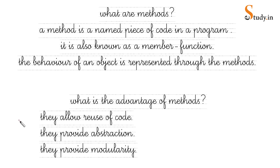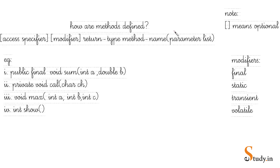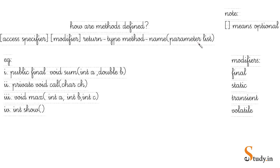Next is how are methods defined. Whenever we define a method, these are the things we specify in order: access specifiers are optional, modifiers are optional, but the return type is not optional. Then the method name — also not optional — and in the round brackets we give the parameter list, which may or may not be present.